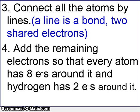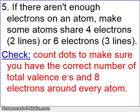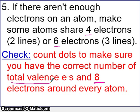The reason the least electronegative element goes in the middle is because electronegative elements want electrons, and if you're in the middle your electrons will be pulled away. Rule three: connect all the atoms by lines — a line is a bond of shared electrons. Then add the remaining electrons around every atom so that every atom has eight and hydrogen has two. If there aren't enough electrons on an atom, proceed to make double bonds and triple bonds. Then check by counting to make sure every element has eight and the total number of valence electrons also matches.